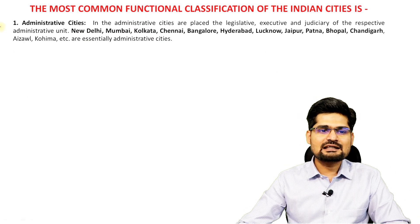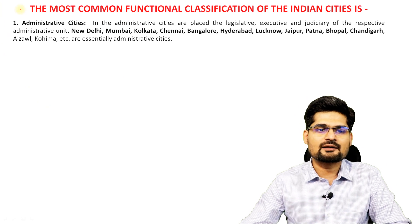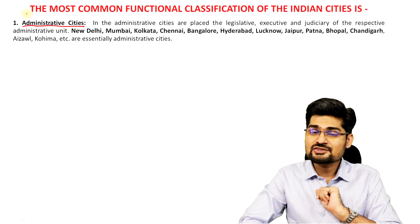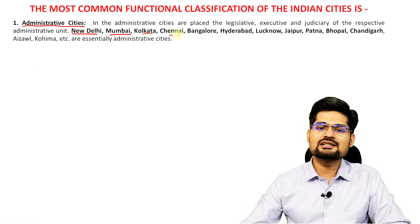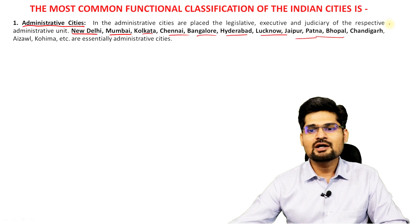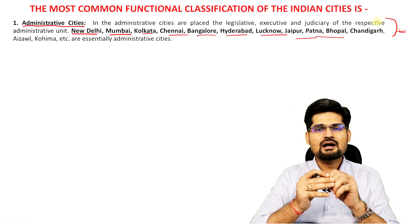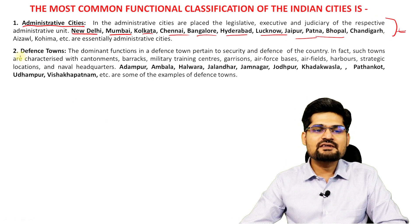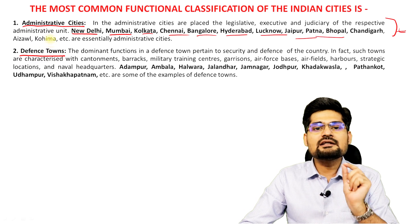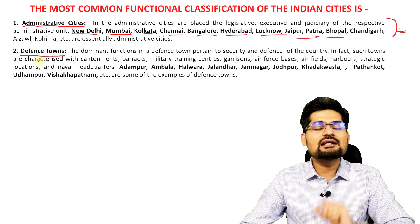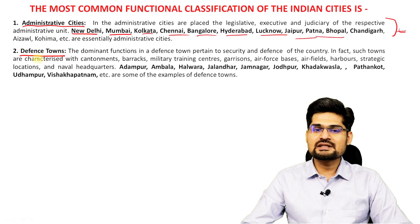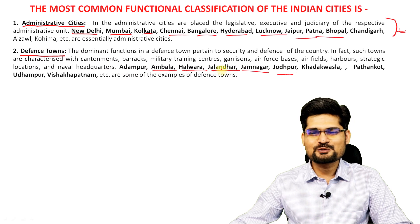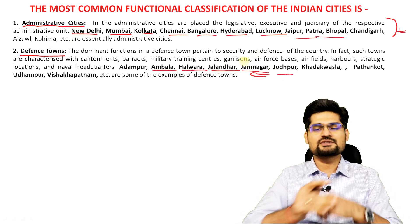The first category is administrative towns — cities known for their administrative functions. Examples include New Delhi, Mumbai, Kolkata, Chennai, Bangalore, Hyderabad, Lucknow, Jaipur, and Patna; most are capital cities of their states. The second category is defense towns, famous for dominant defense and national security functions. Examples include Ambala, Halwara, Jalandhar, Jamnagar, and Jodhpur, among several others.